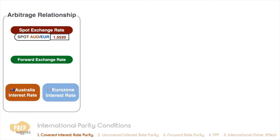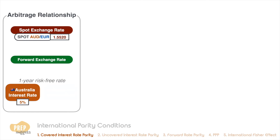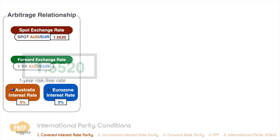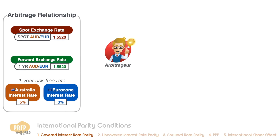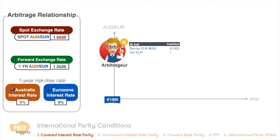Let's say the one-year interest rate for risk-free government debt is five percent in Australia and three percent in the euro zone. Assuming that the spot and the one-year forward rates are the same at 1.552, an arbitrageur can earn riskless profit by taking the following steps. First, he borrows a thousand euros for one year at the risk-free rate of three percent and uses it to purchase AUD at the spot rate.